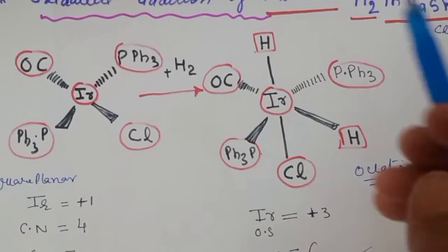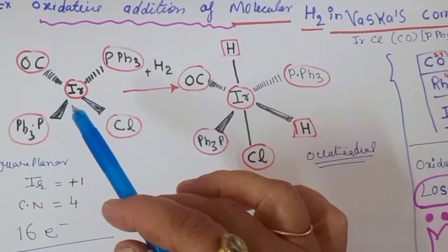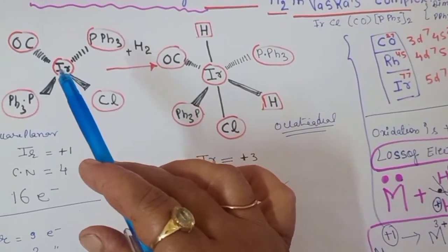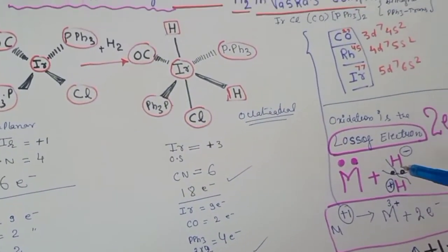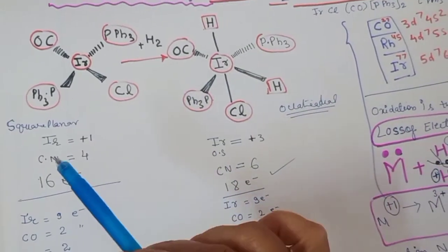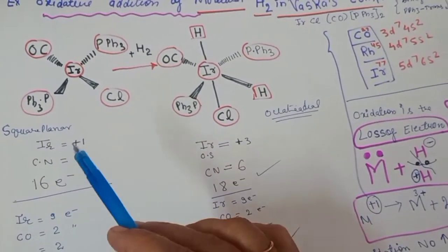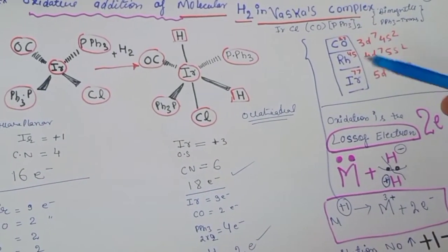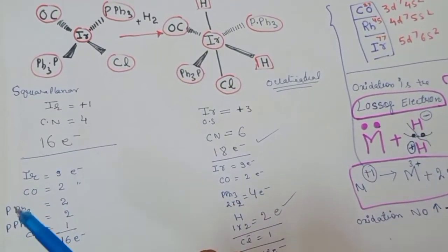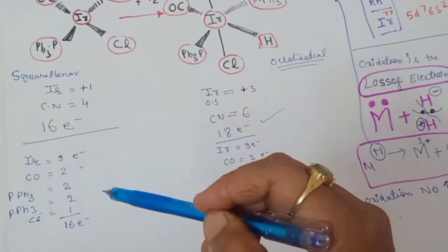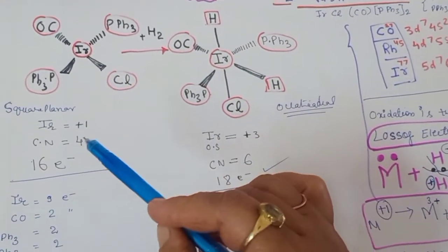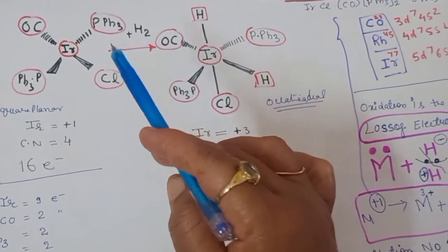We will use Vaska's complex, with iridium at the center. In oxidative addition, molecular hydrogen is added to the iridium complex, since iridium supplies two electrons. H2 gets converted to anionic ligands by taking two electrons from the metal. The first complex has an electron count of 16: iridium contributes 9 electrons, each carbonyl group 2 electrons, each triphenylphosphine 2 electrons, and chlorine 1 — totaling 16. It is a square planar complex with iridium in the +1 oxidation state.